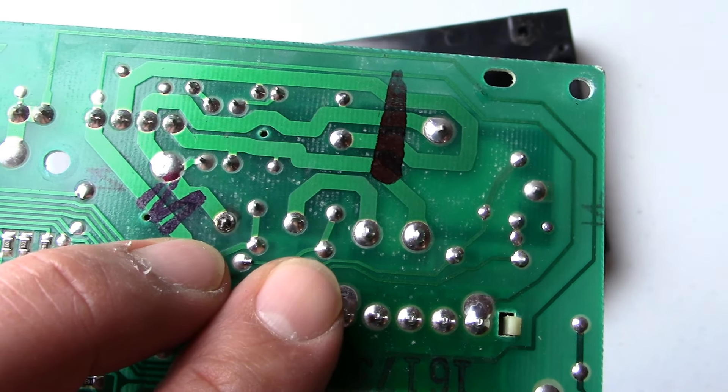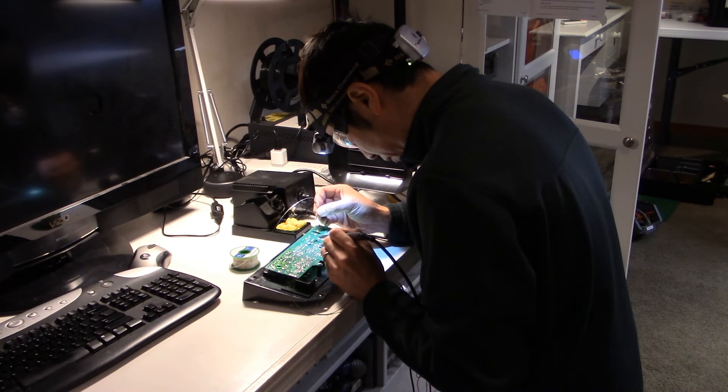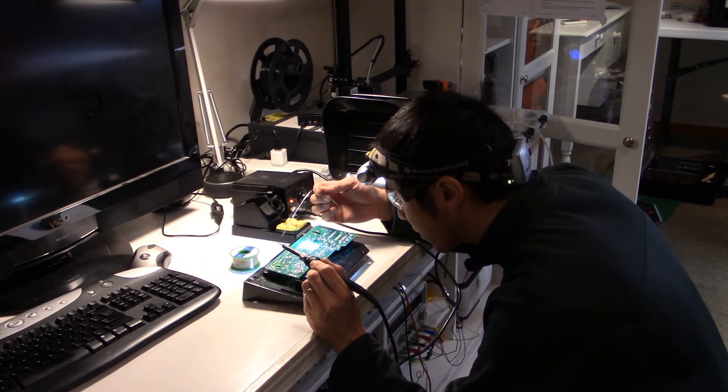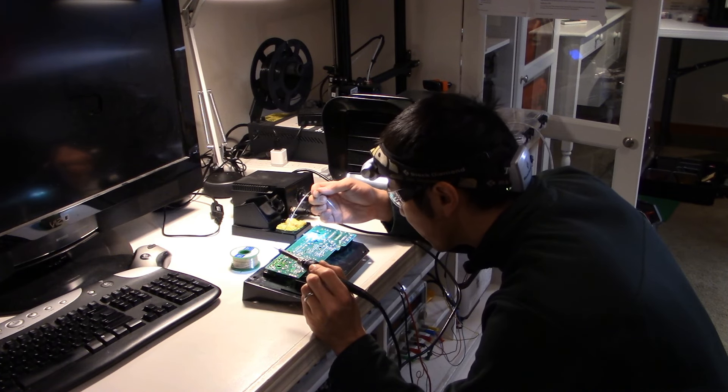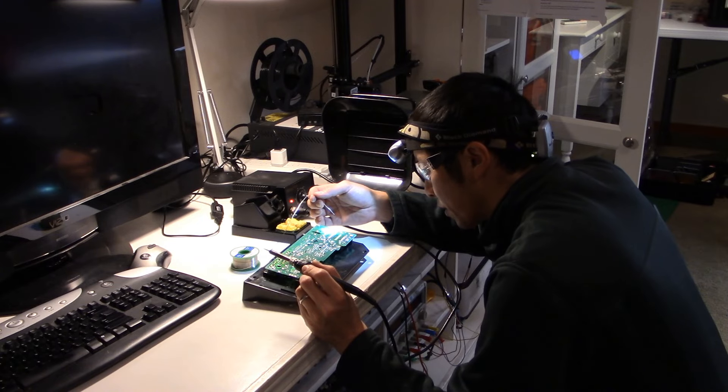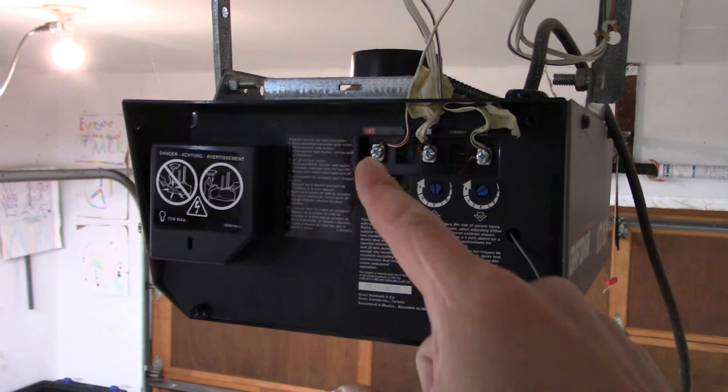So the actual soldering job was really easy. It only took me about 30 seconds—in fact I think it took me twice as long to get everything set up and put away. But anyway, once I had the pad soldered again, I think it's time to take it downstairs and plug it back into the garage door opener housing.